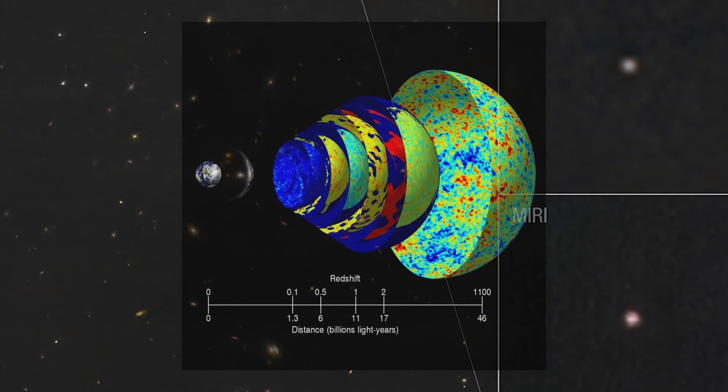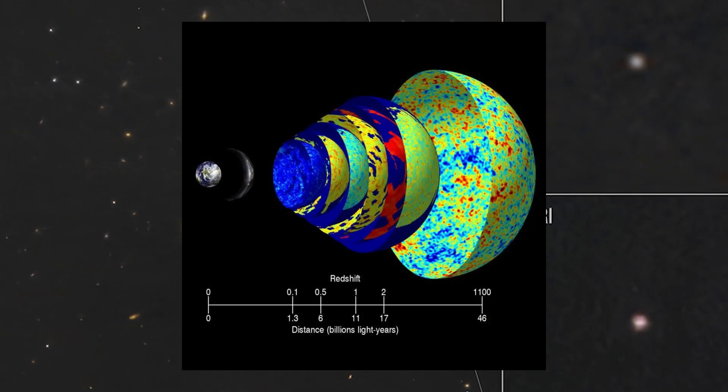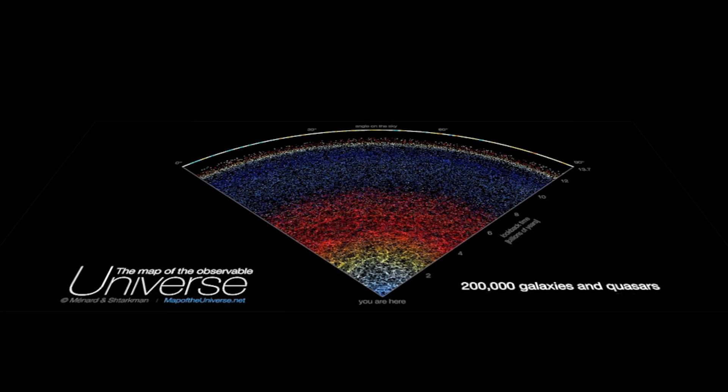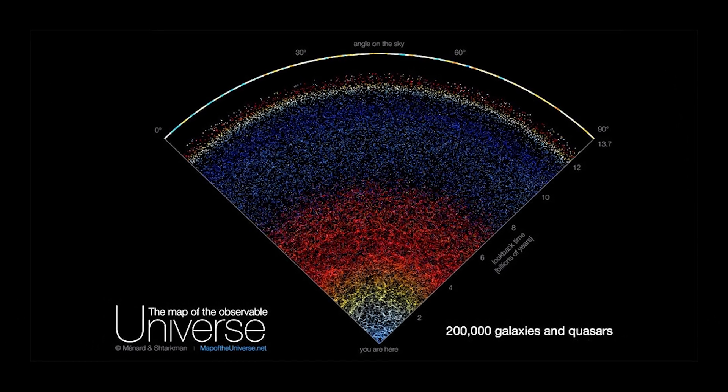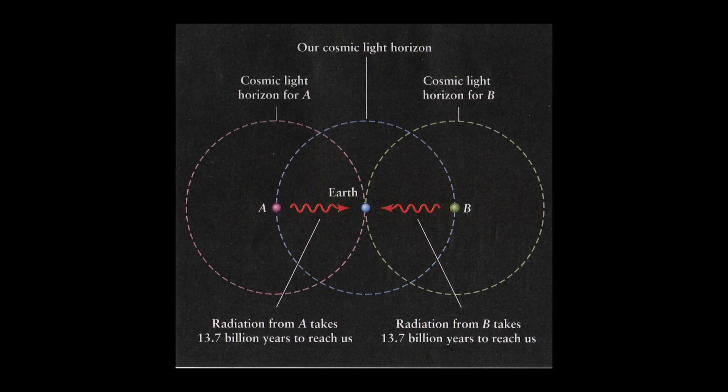According to current models, the universe is flat on large scales, not curved like a sphere and not folded like a donut. It might be infinite, or it might just look that way from our perspective inside it. But again, we run into the boundary, the cosmic light horizon.